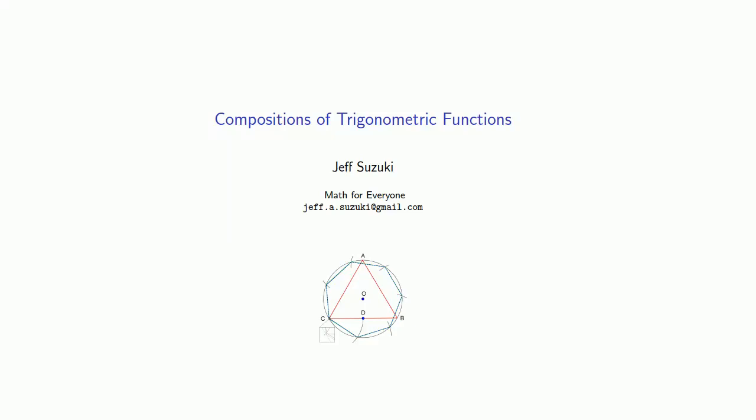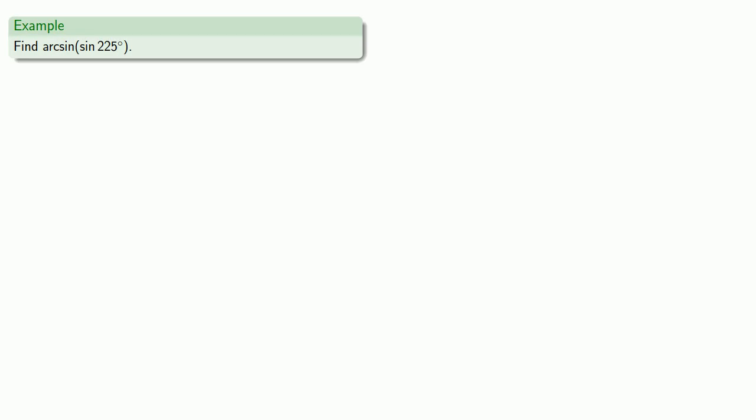So if we have one trigonometric function, we could have compositions of trigonometric functions. For example, let's try to find the arcsine of sine of 225 degrees.